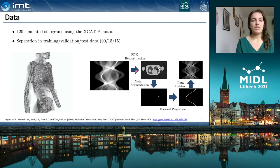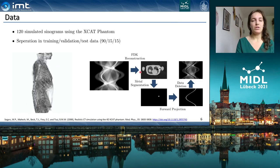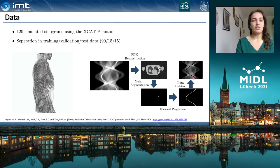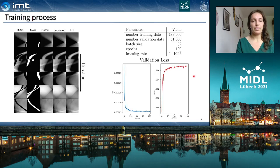To generate the input of the network, the metal objects were segmented in the image domain and then forward projected to obtain the metal trace and the corresponding projection data with the missing image information. Training was then performed with 183,000 training pairs.